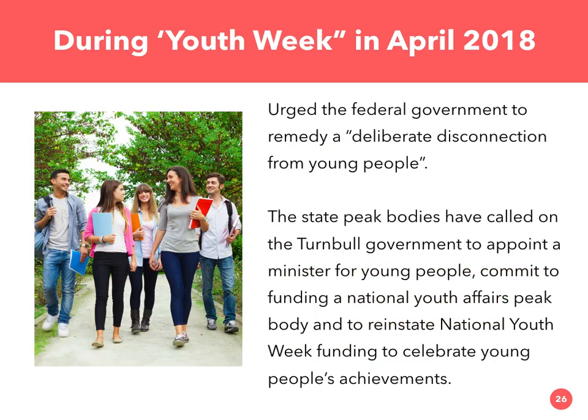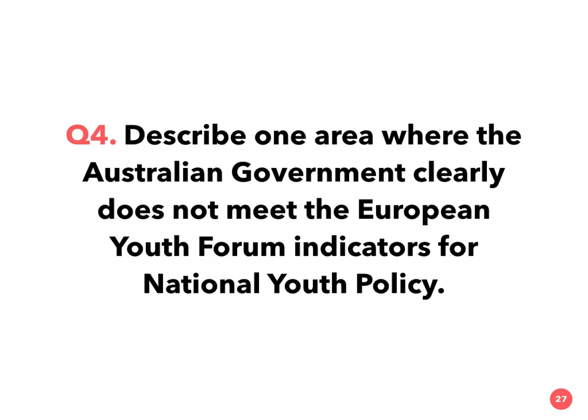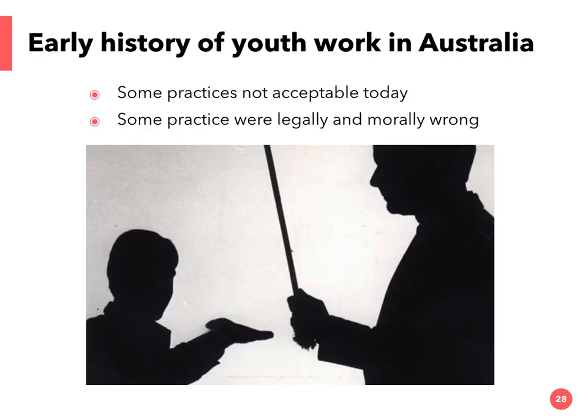Now let's look at the early history of youth work in Australia. Question five asks you to identify four different approaches to youth work over the past 200 years. It should be noted that some practices from earlier periods would not be acceptable today — such as caning and corporal punishment. And some practices were legally and morally wrong throughout history and remain so today, including the abuse and sexual abuse of young people.